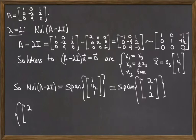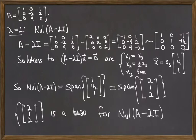So our conclusion here is that the vector 2, 1, 2, that set containing just that vector 2, 1, 2, is a basis for the eigenspace for lambda equal to 2.